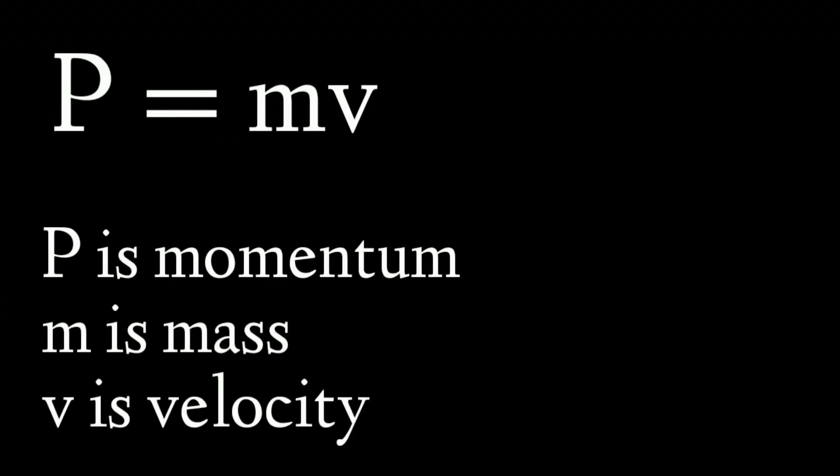First, we have to consider a quantity called momentum. So what is momentum? Momentum of a body is defined to be the product of its mass m and velocity v, and is denoted by p. So p is equal to m into v, where m is the mass of the body and v is the velocity of the body. Momentum is a vector quantity, which means it has magnitude and direction.